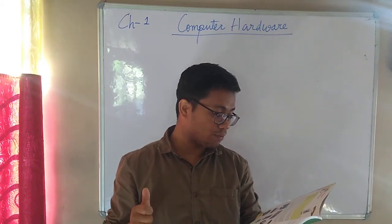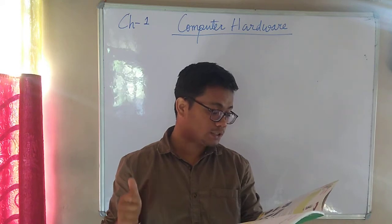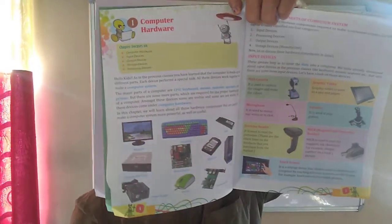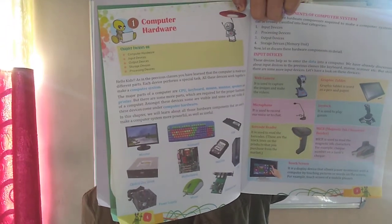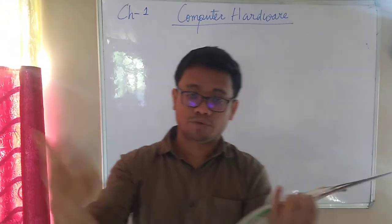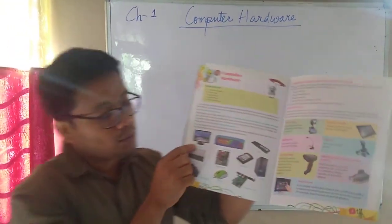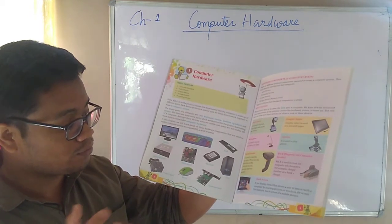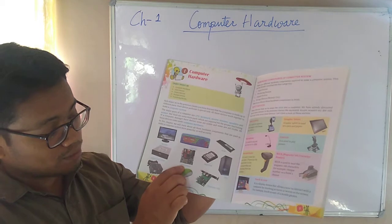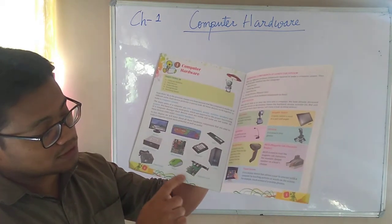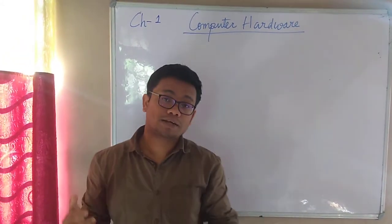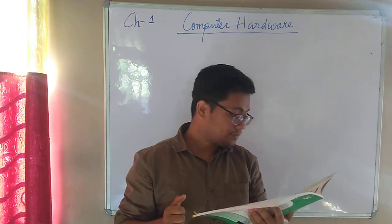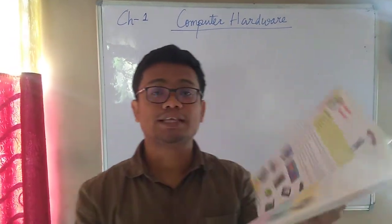This whole system of parts which function together to make a computer work is actually known as a computer system. The major parts of the computer are: CPU, keyboard, mouse, monitor, speakers, and printer. In this figure you can see all the parts — monitor, keyboard, RAM, optical disk drive, motherboard, hard disk, CPU, expansion card, mouse, and power supply. These are all parts assembled together that help the computer to work.